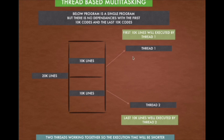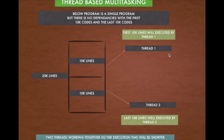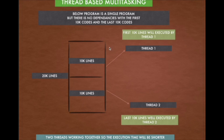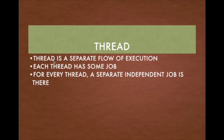To do that, I'm going to assign the first 10,000 lines of code to thread number one and the last 10,000 lines of code to thread number two. We can see that thread number one is going to be executed separately, and similarly thread number two is going to execute its 10,000 lines of code. So this is a separate flow of execution.